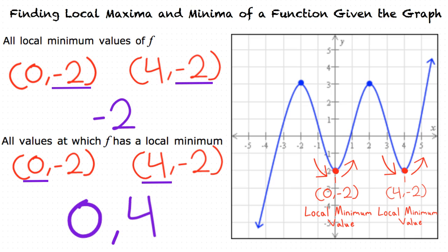Now that we understand how to find local minima points, how would we find the maxima points? To find the maxima points, we use the same principle as with our minima, but instead of looking for a change of direction from decreasing to increasing, we are looking for a change of direction from increasing to decreasing.